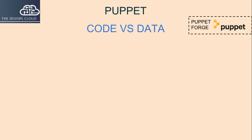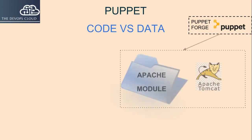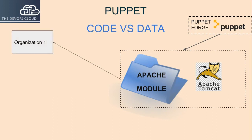For example, an Apache profile that an organization creates for itself might use the official Puppet Apache module to install and configure Apache. But the profile might also contain resources for an organization's SSL certificates or credentials, layered on top of the configuration provided by the Puppet Apache module. The resources modeling the SSL certificates are necessary only for that particular organization, which is why they don't show up in the official Puppet Apache module.